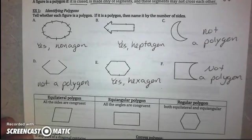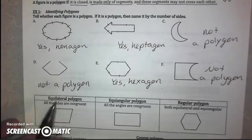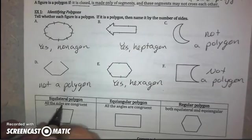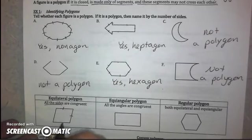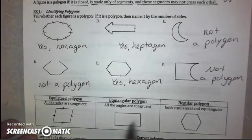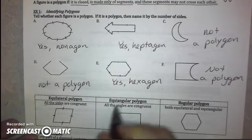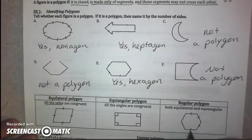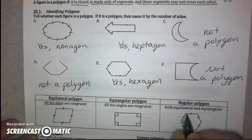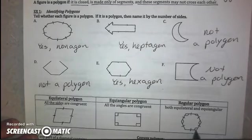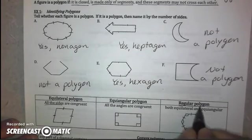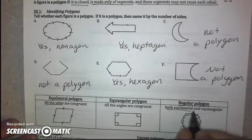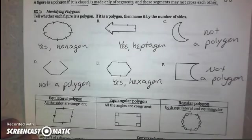So then further, beyond classifying by its name, by its number of sides, we can talk about polygons that are equilateral, meaning all sides are congruent. We can also call it equiangular, when all angles are congruent. And if it is both equilateral and equiangular, we call that a regular polygon. Regular polygons are both equilateral and equiangular. All angles are congruent. All sides are congruent.